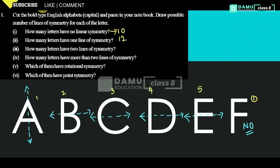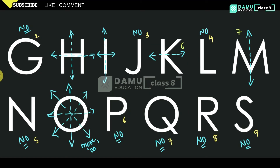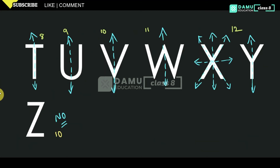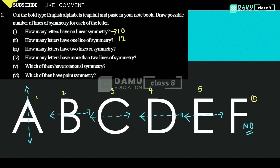Next: how many letters have two lines of symmetry? Counting — H, I, X, and one more — that is four letters which have two lines of symmetry.